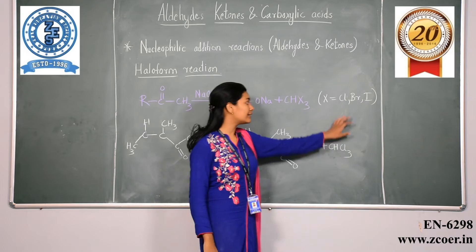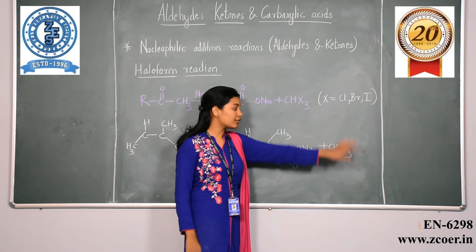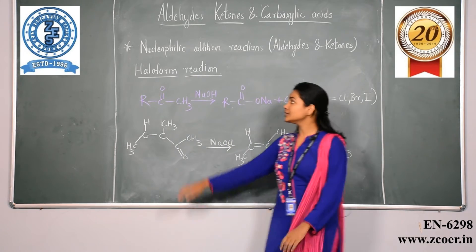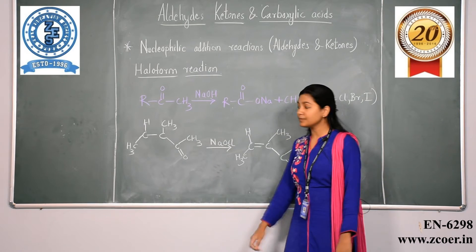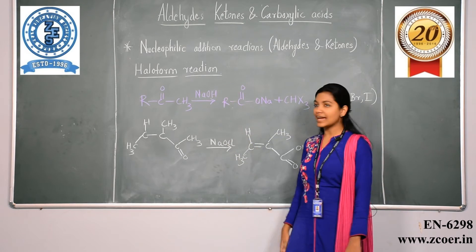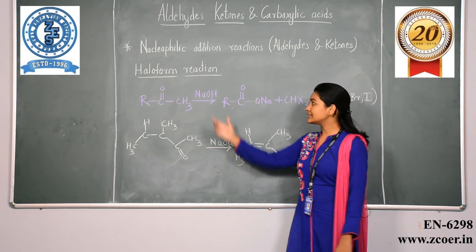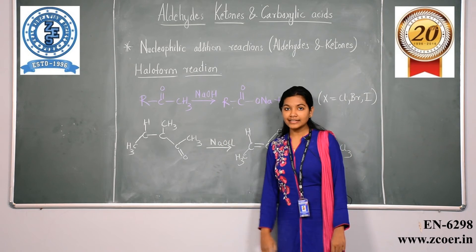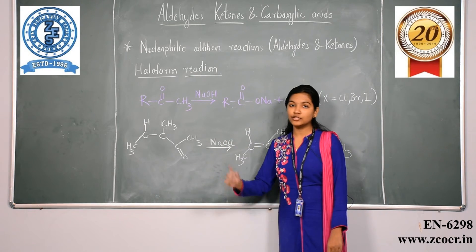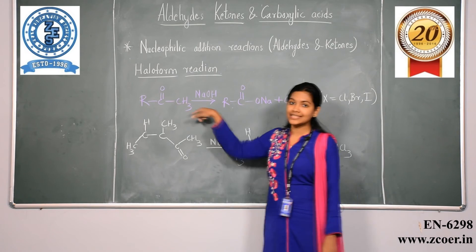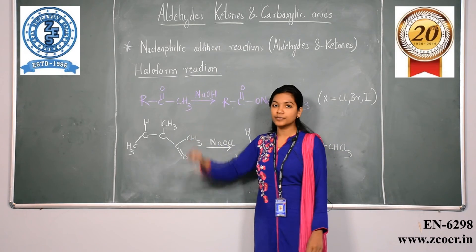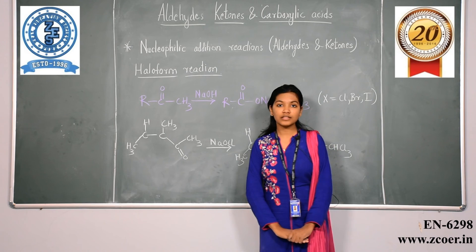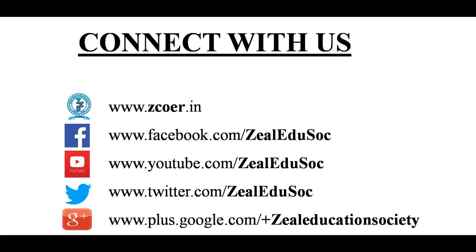If the halogen considered is iodine instead of chlorine, the reaction is called the iodoform reaction. When the iodoform reaction is carried out using sodium hypoiodite, it can be used for the detection of the CH3CO group in a compound.